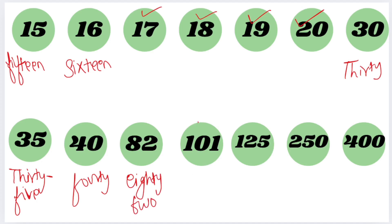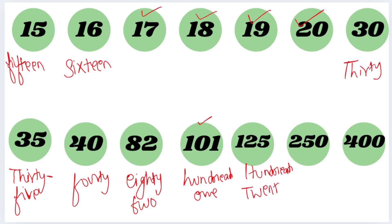What is this number? This is greater than 100. How do we name this number? 101 — correct, 101. This is 125 — one hundred and twenty-five. Correct. And what is this number? Two hundred and fifty, four hundred.